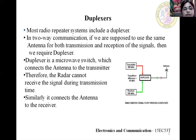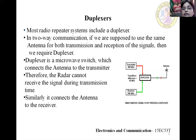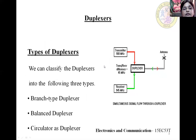The radar cannot receive the signal during the transmission time. Similarly, it connects the antenna to the receiver during reception. The radar signals are transmitted through the duplexer through the antenna, and at the same time the receiver is not connected. We can classify the duplexer into three types: the branch type duplexer, balanced duplexer, and circulator as duplexer.